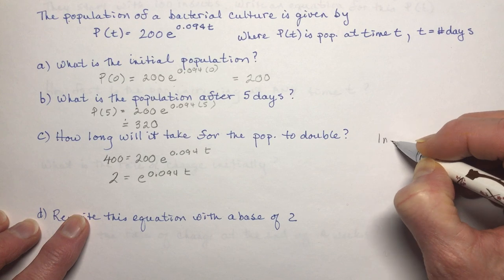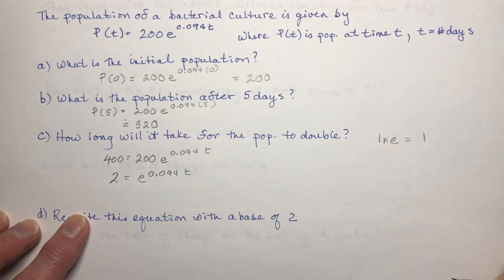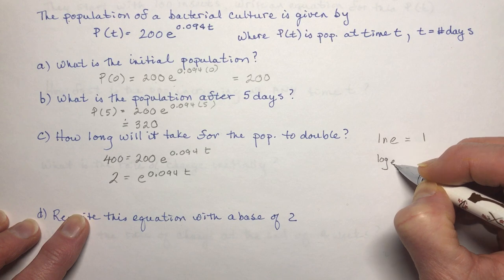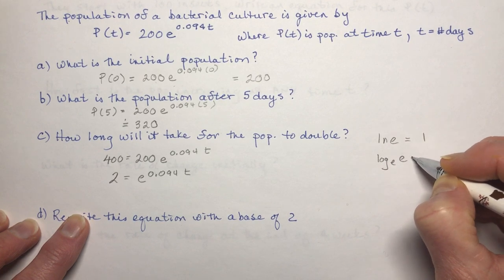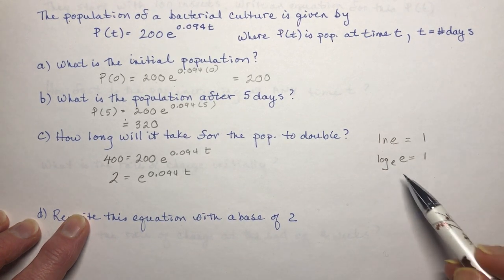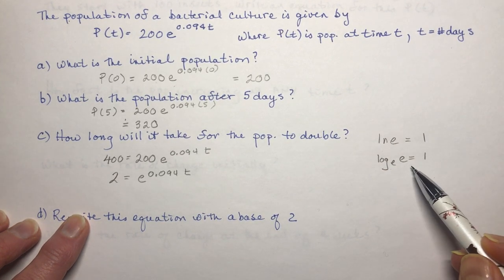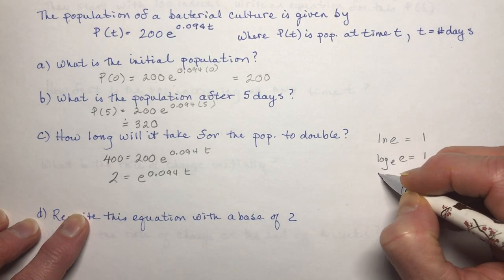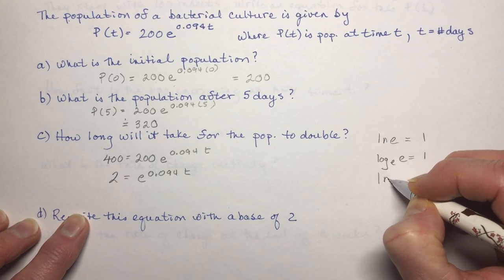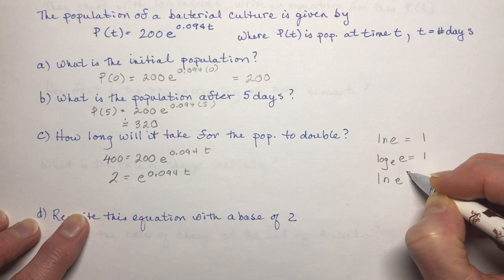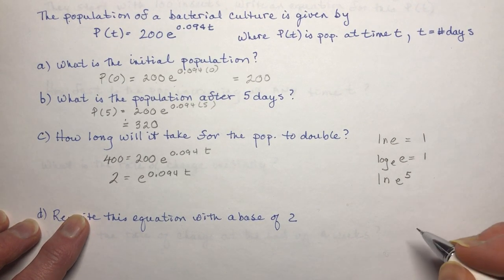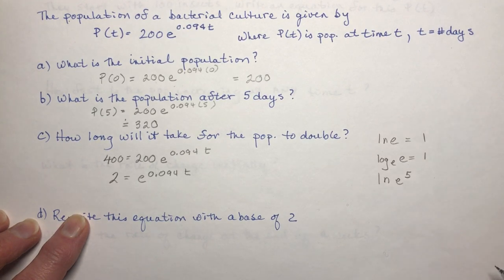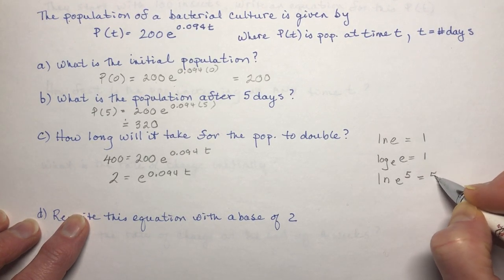The natural log, ln, is the logarithm base E. So the ln of E equals 1, because that's really log base E of E equals 1 — what do you raise E to in order to get E? The answer is 1. For example, the ln of E to the 5th is like asking log base E of E to the 5th, and the answer is 5.